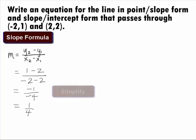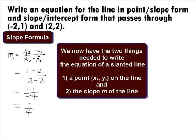So, we are looking for a line that passes through the points negative 2, 1 and 2, 2 and has a slope m equal to 1 fourth. It now looks like we have all the information we need. Let's go ahead and put this into the point slope form.